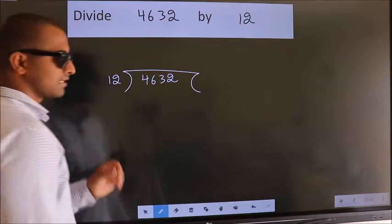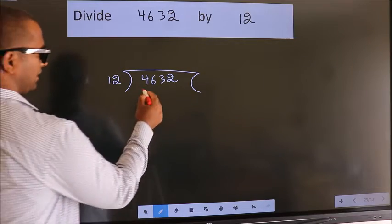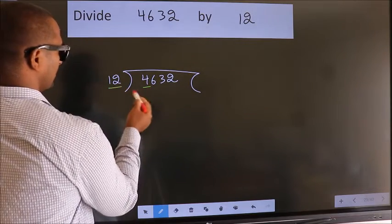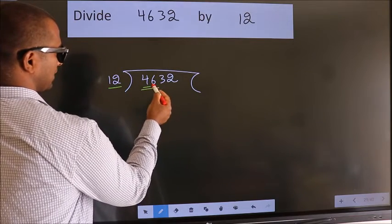This is your step 1. Next, here we have 4, here 12. 4 smaller than 12, so we should take two numbers: 46.